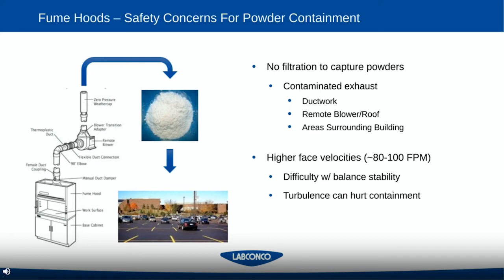Another critical issue with fume hoods is that they typically run at higher face velocities. While fume hoods have become more effective at lower face velocities over the years, EH&S organizations often choose to run them at 80 to 100 feet per minute or even faster, which poses inherent risks to both the process and user safety. The two most common disruptions are balance stability — especially when working with an open top-loader balance — and turbulent air causing non-uniform airflow through the face of the cabinet, which can bring powders out of the hood when airflow is too fast.